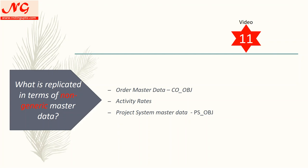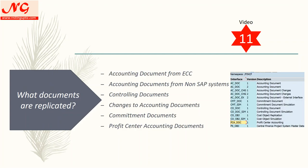Regarding documents replicated: we have accounting documents from ECC, accounting documents from non-SAP systems such as Oracle, JD Edwards, or Microsoft Dynamics Navision, and controlling documents stored in the COBK table. Changes to accounting documents — if you make any permitted change in ECC — are also replicated to Central Finance, along with commitment documents and profit center accounting documents.